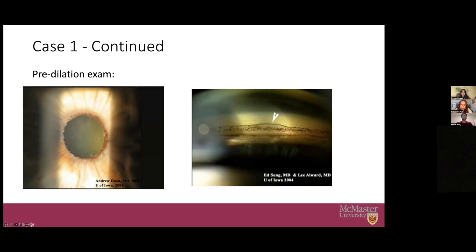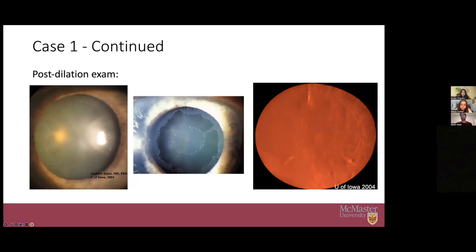After dilating the pupil, you can see the classic bullseye sign on the anterior capsule — another great example shown here. When you retroilluminate, you can again see that same bullseye sign, which is very classic for pseudoexfoliation.